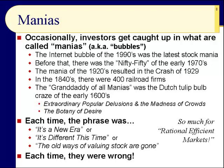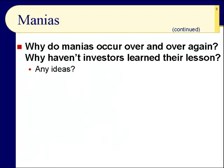Markets are not always rational. Markets can stay irrational far longer than you can stay solvent. Slide number nine: why do manias occur over and over again? By the way, the 2008-2009 crash was not because of the stock market — it was because of the bond market, specifically the bonds tied to mortgages: mortgage-backed securities.